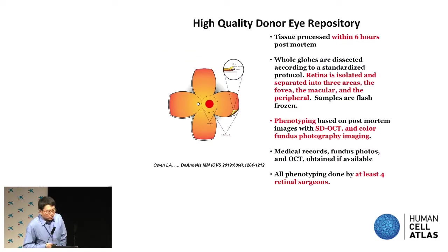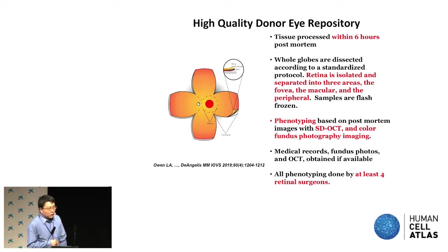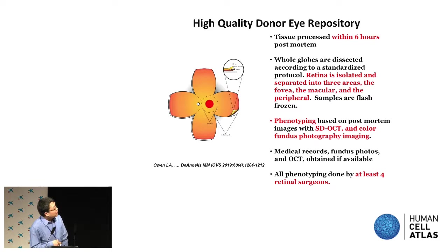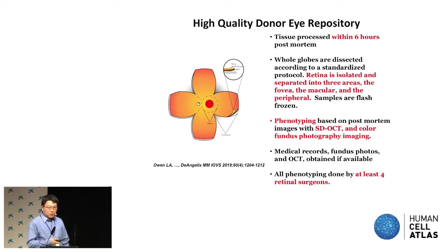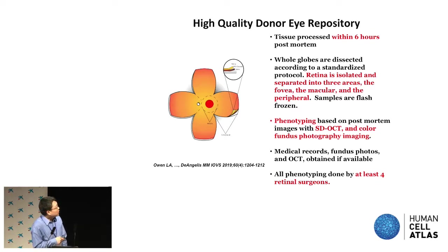It's important to get really high-quality tissue to start with, so we implement a very rigorous sample collection. The tissue is processed within six hours — actually we are pushing to four hours post-mortem right now. The whole eye is dissected according to protocol. The retina is cut into a butterfly shape and we separate it out. We take a two-millimeter punch into the foveal region, which is basically where we see color vision with the cones.